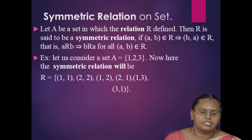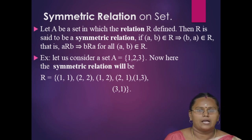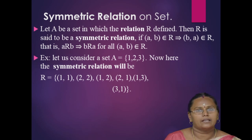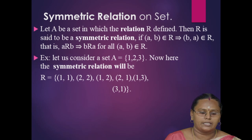Next, symmetric relation on a set. Let A be a set on which the relation R is defined. Then R is said to be a symmetric relation if (A, B) belongs to R implies (B, A) belongs to R. That is, A is related to B implies B is related to A, for all (A, B) belonging to R.